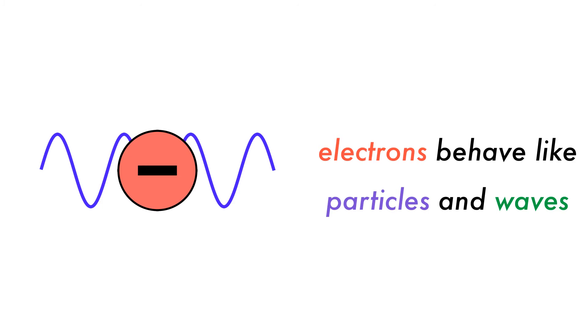This means that electrons must always be considered as both particles and waves if we are to truly understand their properties.